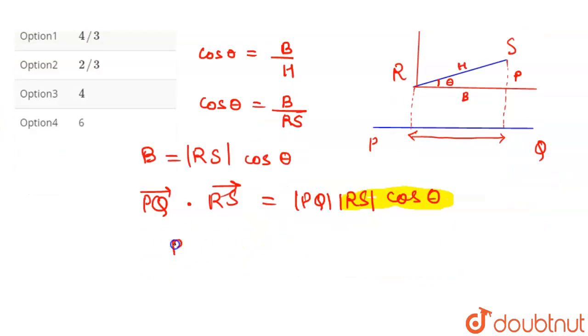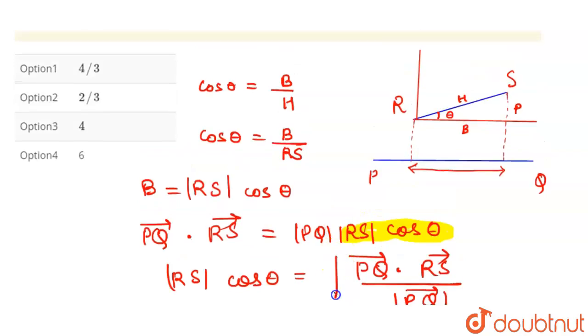|RS| cos θ equals (PQ · RS) / |PQ|. Since we have to find the projection, the length of projection, and length cannot be negative, we will put a mod here.